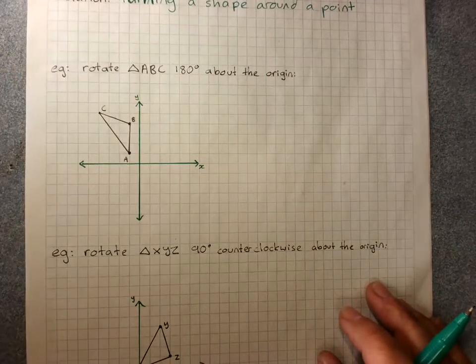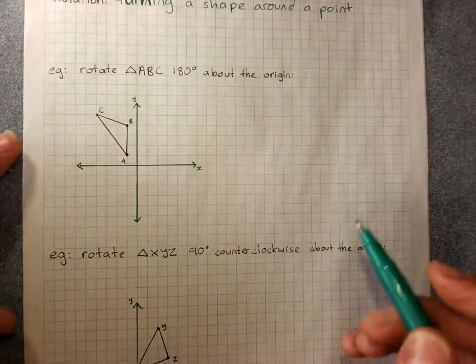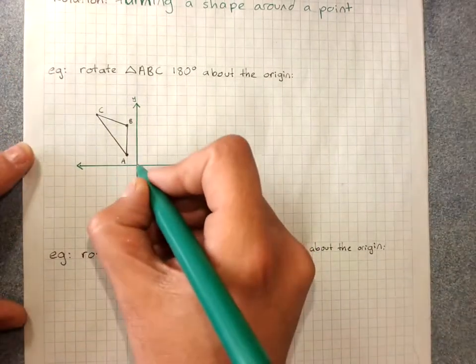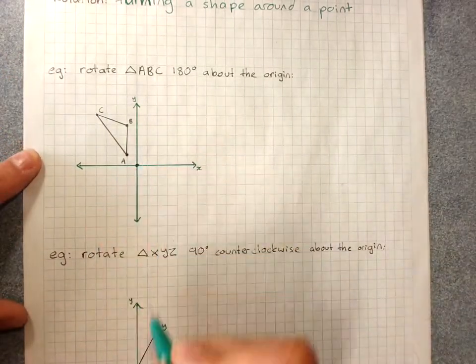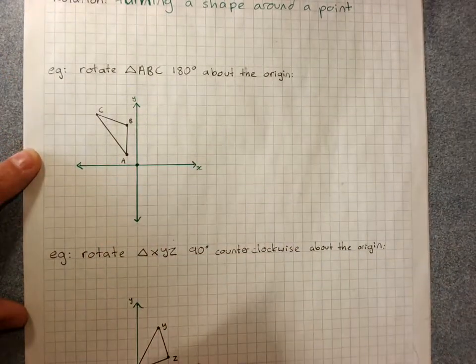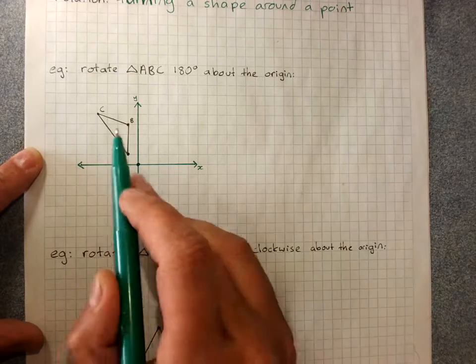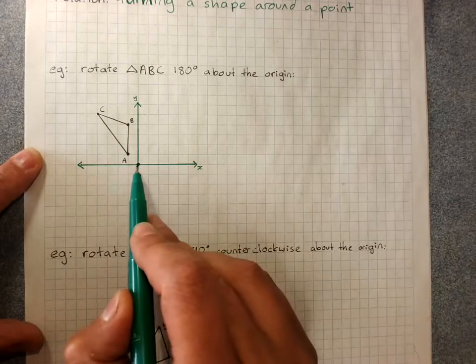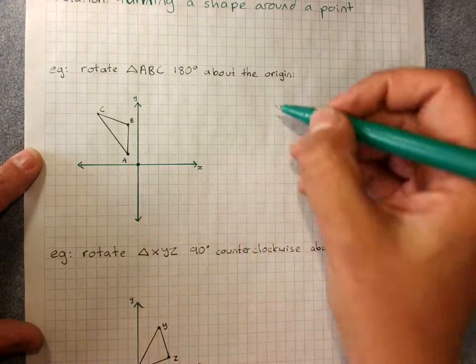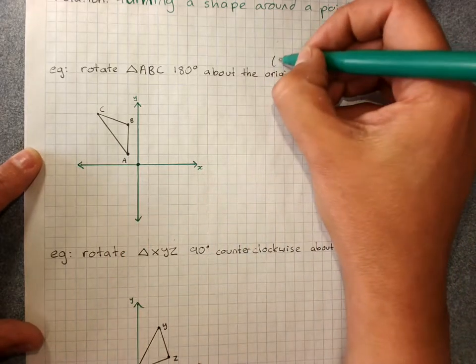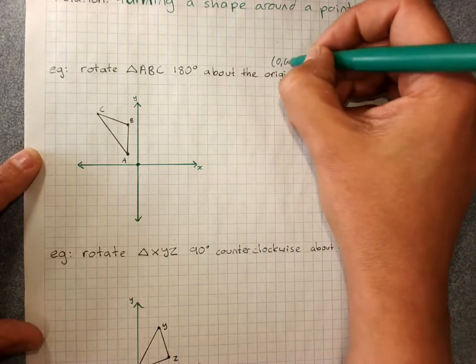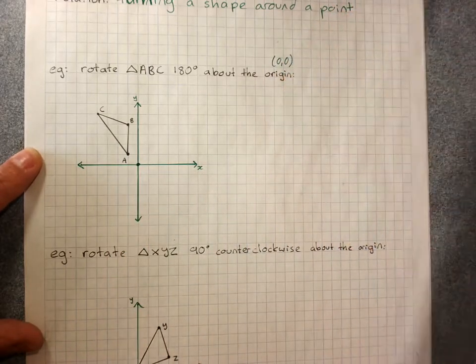We'll be rotating our shapes around the origin, which, if you remember, is the point (0, 0). So, a little reminder: that's (0, 0).